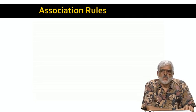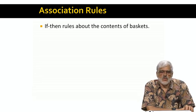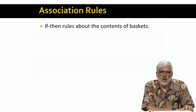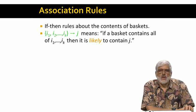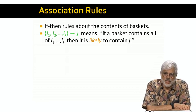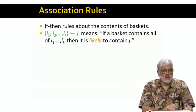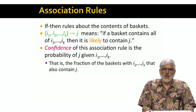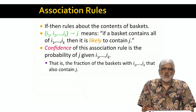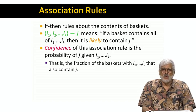Often the problem of finding frequent item sets is characterized as the problem of discovering association rules. These are rules that say if a basket contains some collection of items, then it is also likely to contain another particular item. The notation for association rules that we use is shown here. Informally, if we assert an association rule that says I1 through IK implies J, we mean that if a basket contains all of I1 through IK, then it is likely to contain J as well. The degree to which this event is likely is called the confidence of the rule. It's the fraction of the baskets containing I1 through IK that also contain J.